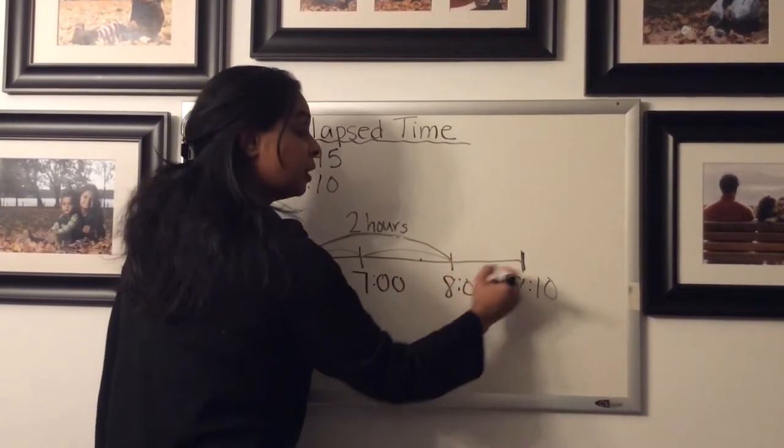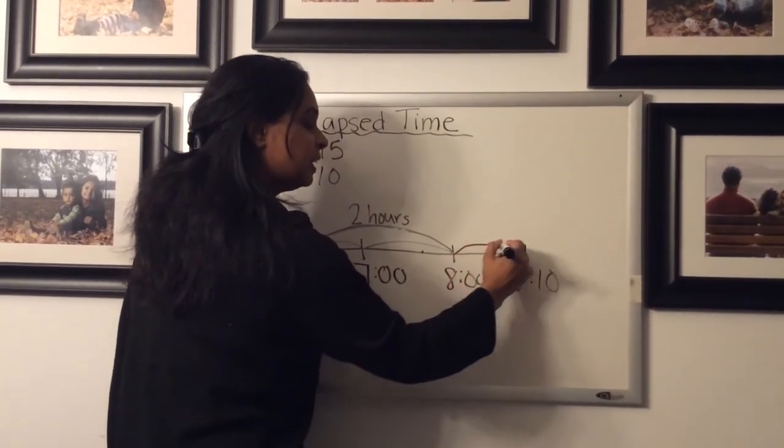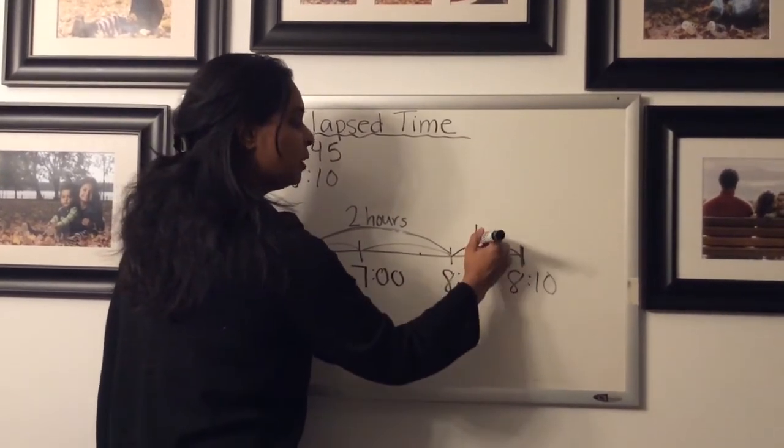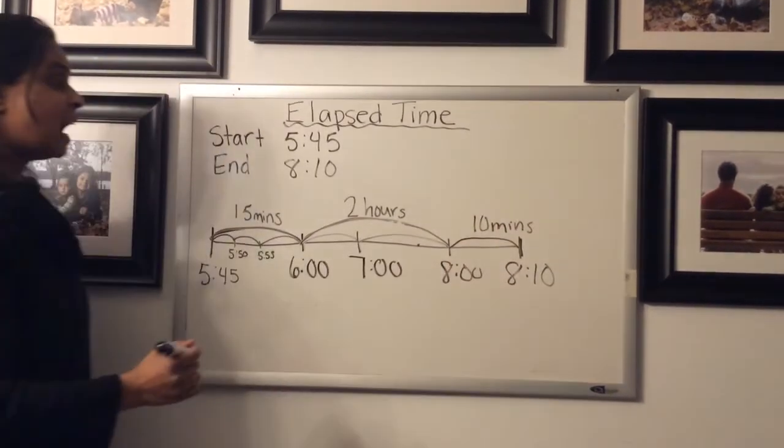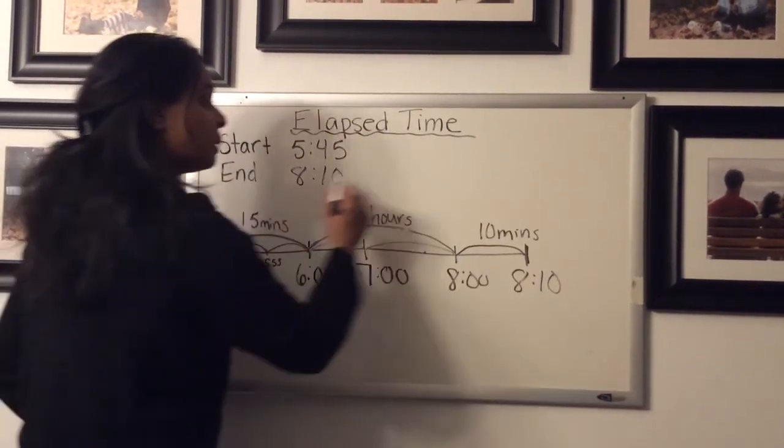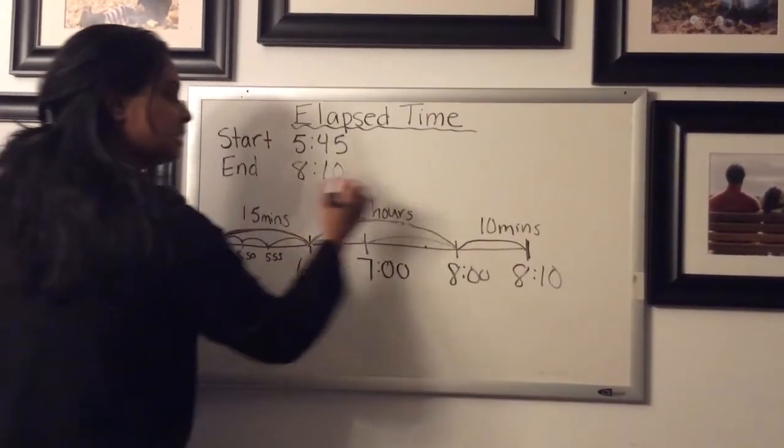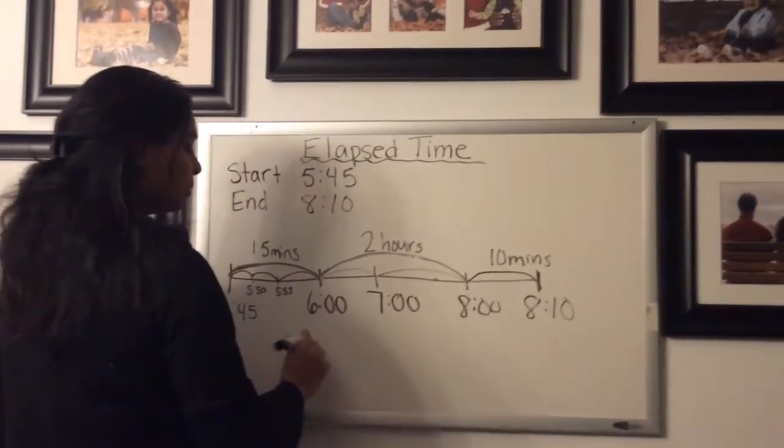And then we're going to count up the remaining extra minutes. And from here to here, from eight o'clock to 8:10, we know that that's 10 minutes here. Now to get our final elapsed time to find out how much time has passed all together, you're going to put all of this time together. So first do your hours.